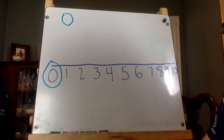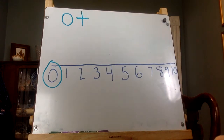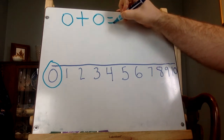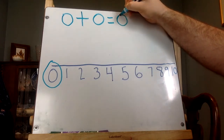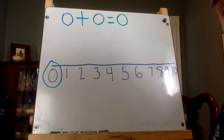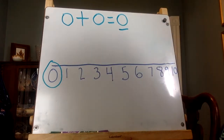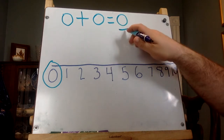Well, if I have zero — nothing — and then Astrid comes and she also has zero, what do we still have? Zero. If I have nothing, zero, and Astrid has nothing, zero, then we still have zero. We haven't moved anywhere on the number line. So we could say in addition that zero plus zero equals zero.